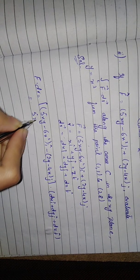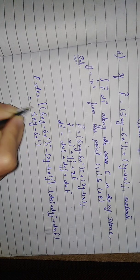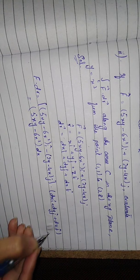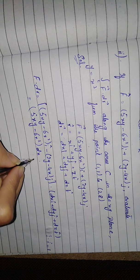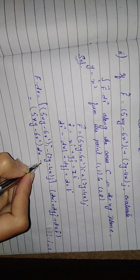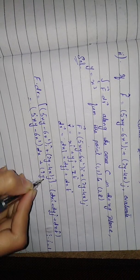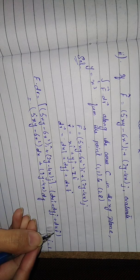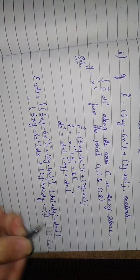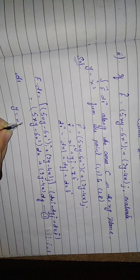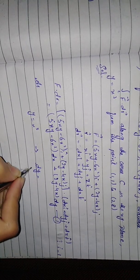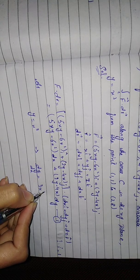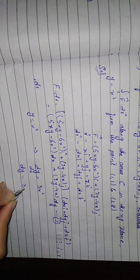We will solve f dot dr. Writing out the dot product, we have xy minus 6x squared dx plus 2y minus 4x dy. Now we have given y equals x cubed. If we take the derivative, dy over dx equals 3x squared, which can also be written as dy equals 3x squared dx. Now we will put these values into f dot dr.